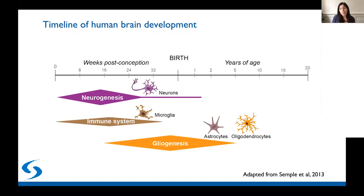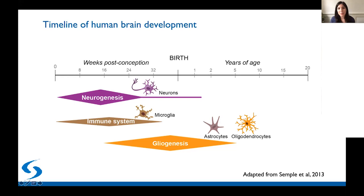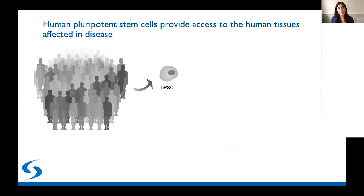In order to bridge this gap, it is really important to study human genetic backgrounds and human cell types. If we consider the timeline of human brain development, neurons are mostly generated in the prenatal period before birth. Similarly, immune cells present in the brain are also generated prenatally. However, glial cells such as astrocytes and oligodendrocytes are generated not only prenatally, but also during the first few years after birth. Unfortunately, it is very hard to get tissue from the developing human brain, and even harder to manipulate those cells to identify molecular changes. This is why we turn to human pluripotent stem cells.